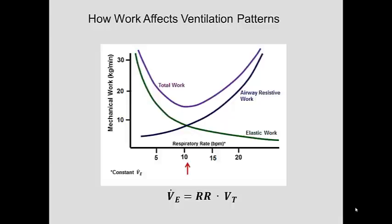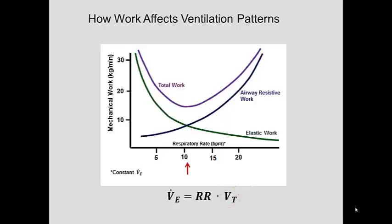One of the key features of this graph is that along the x-axis, we're looking at changes in respiratory rate in breaths per minute. As the respiratory rate increases, there must be a corresponding decrease in the tidal volume to maintain that constant minute ventilation. We have a specific demand for minute ventilation.